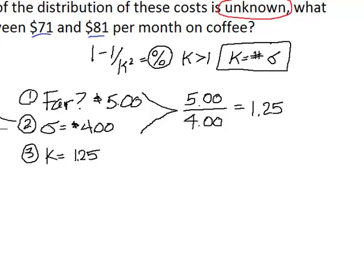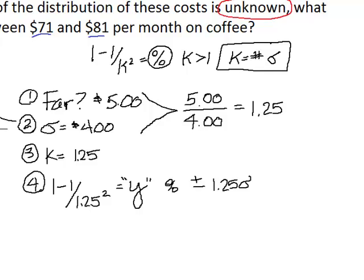And going back to Chebyshev's theorem, I know that an unknown quantity of data will fall 1 minus 1 over K, where K is the number of standard deviations, which in this case is 1.25 squared, where K is going to give me, for lack of a better term, I'm going to use Y, where Y is simply the percentage of data that falls plus or minus 1.25 standard deviations from the mean.